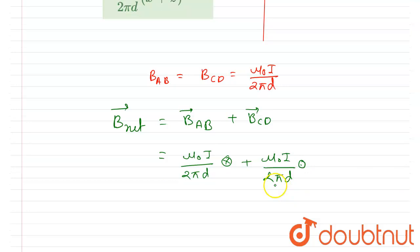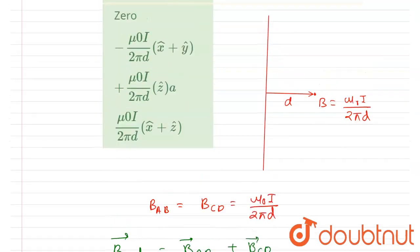So these two will add up and the net magnetic field will be zero, since both are having same magnitude and opposite direction. So this will be your answer.